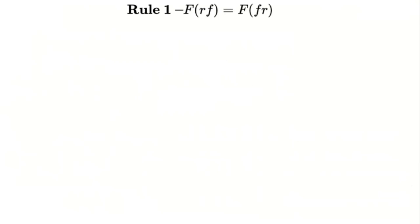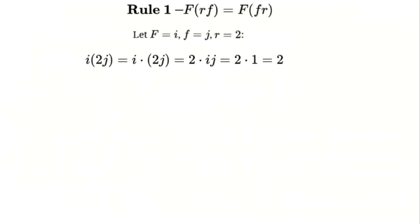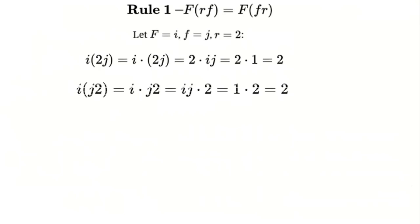For example, let F = i, small f = j, and r = 2. Calculate F × r × small_f: i × 2 × j = 2 × i × j. Since i·j = 1, this becomes 2 × 1 = 2. Now calculate F × small_f × r: i × j × 2 = i·j × 2. Again, since i·j = 1, this becomes 1 × 2 = 2. So F × r × small_f = F × small_f × r.